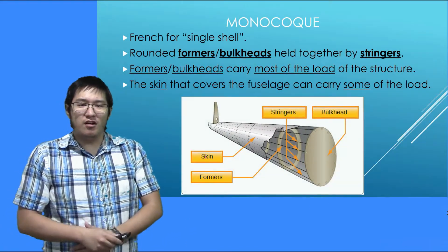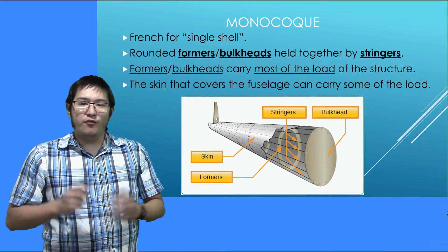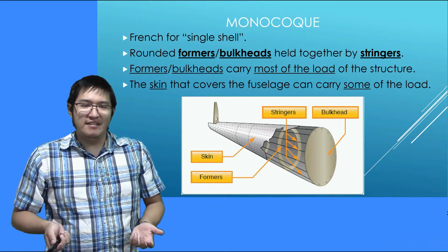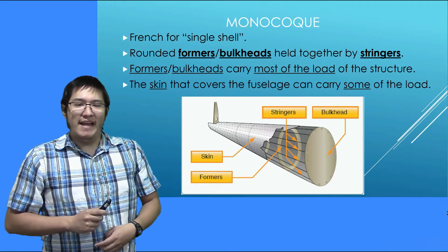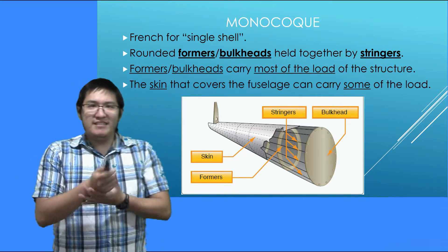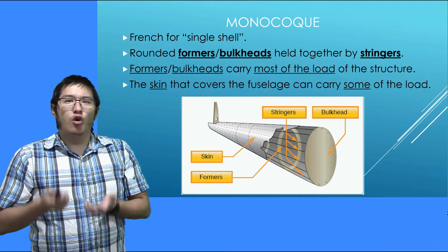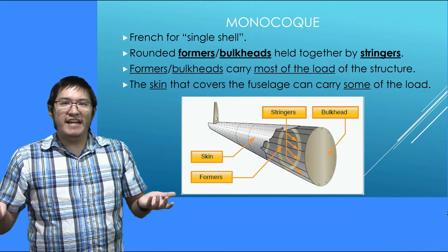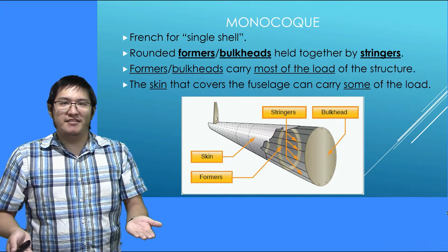Next up is the monocoque. This is French for 'single shell.' It is made up of rounded formers or bulkheads, and they are held together by stringers. The formers and bulkheads carry most of the load in this structure, and then there is a skin that covers the fuselage and carries a little bit of the load. This type of fuselage you will usually find in World War II-era aircraft. Modern day aircraft usually have a combination of both monocoque and truss type.